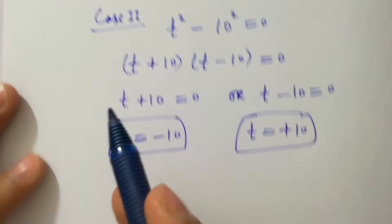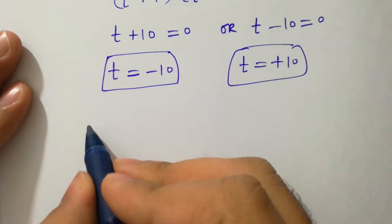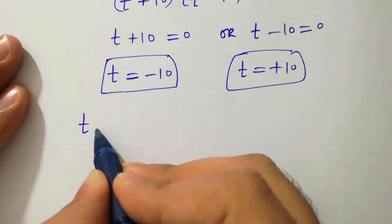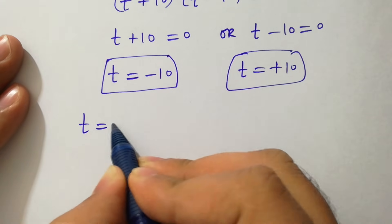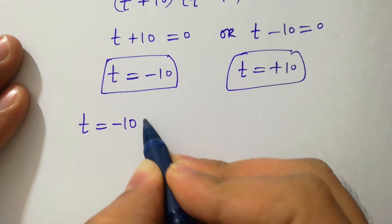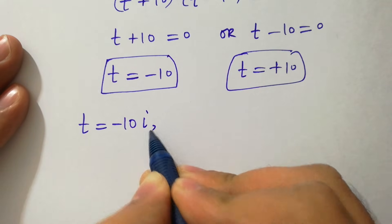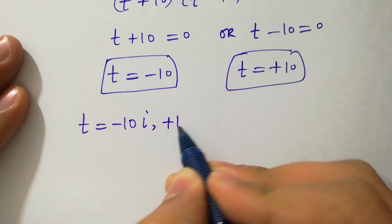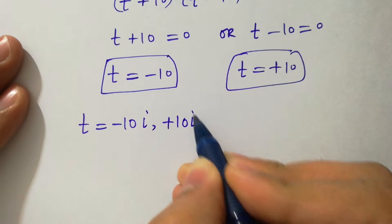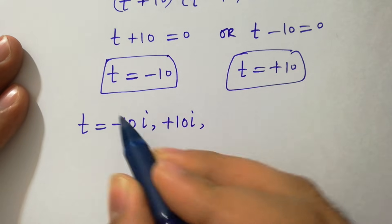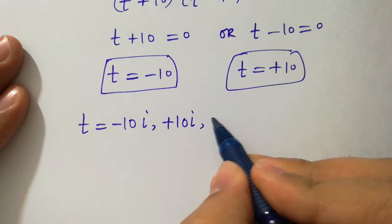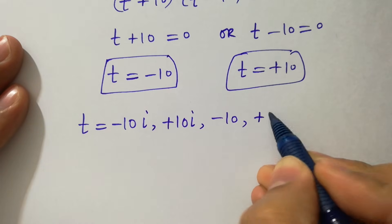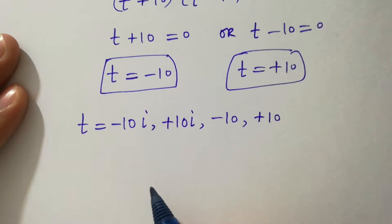We have four solutions here: t equal to minus 10i, plus 10i, minus 10, and plus 10.